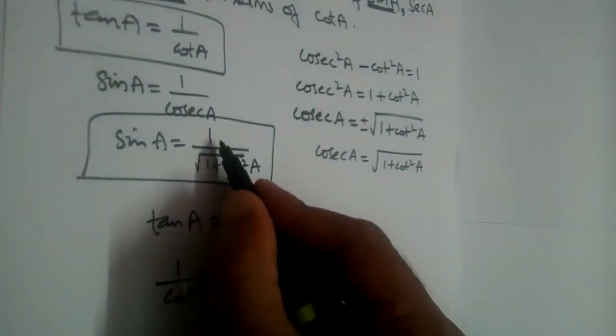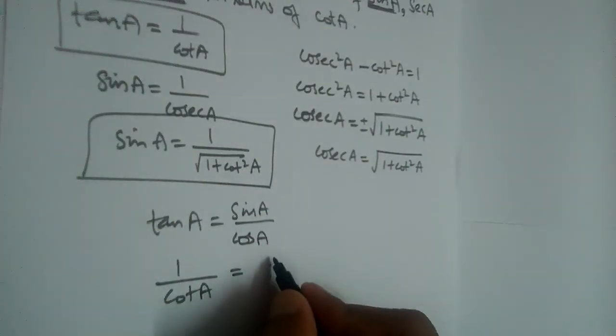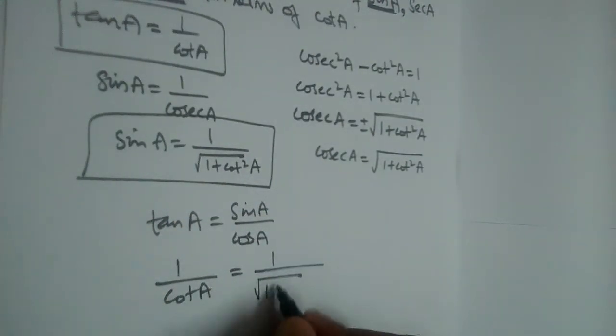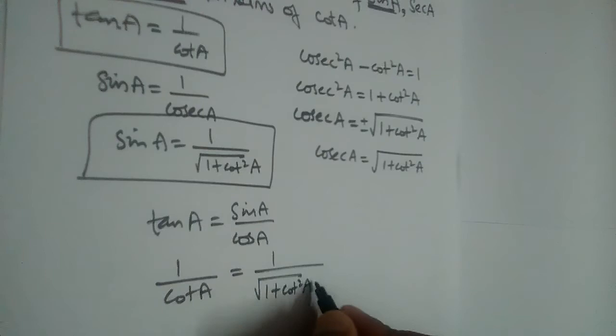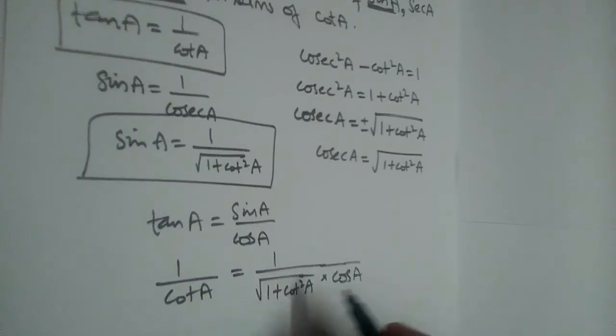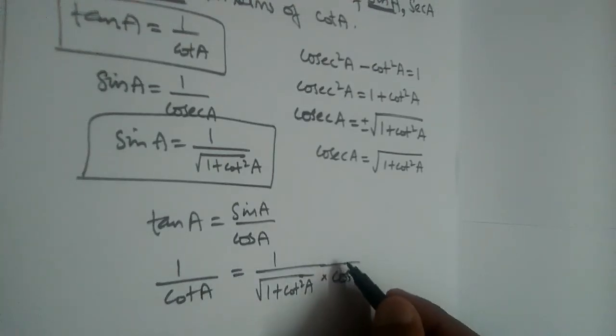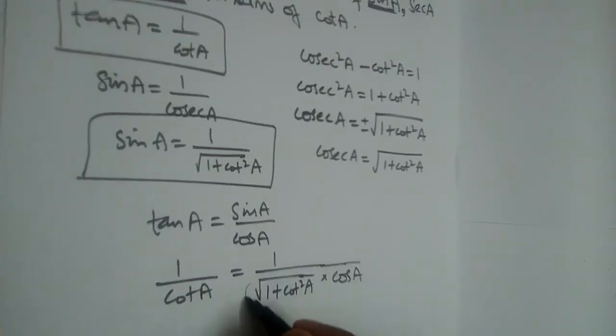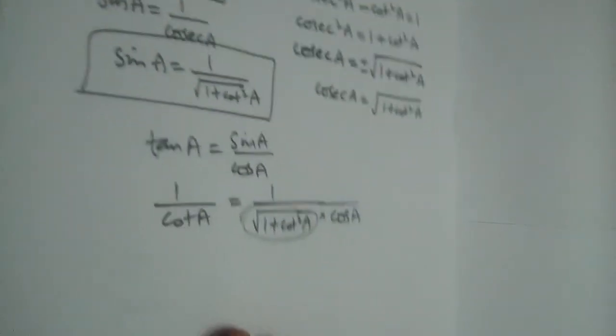Here we have cos, so it is cos A. If you want to find 1 by cos, let us send this term root 1 plus cot square to the other side. So it will become root 1 plus cot square A divided by cot A equals 1 by cos A.